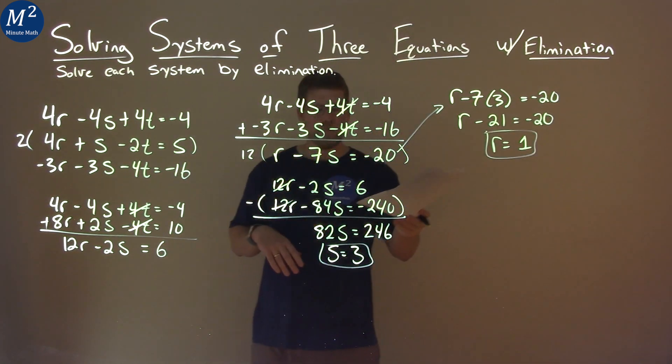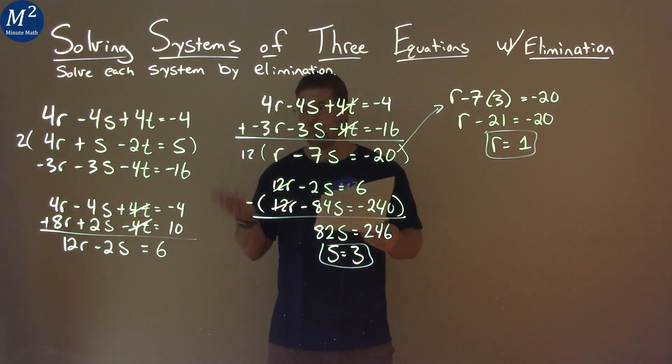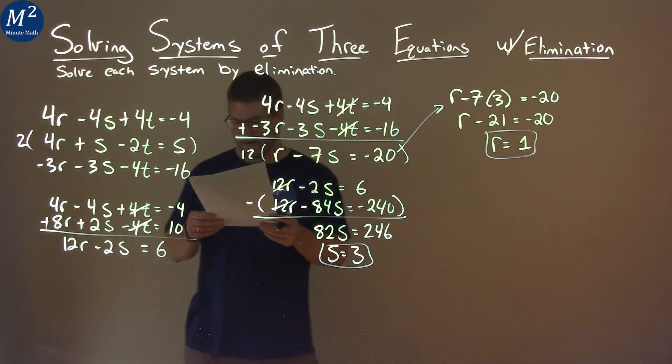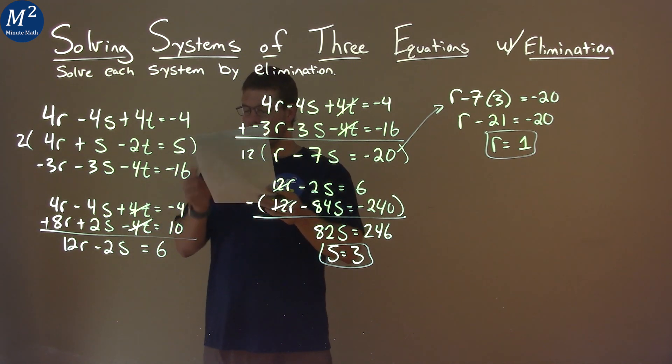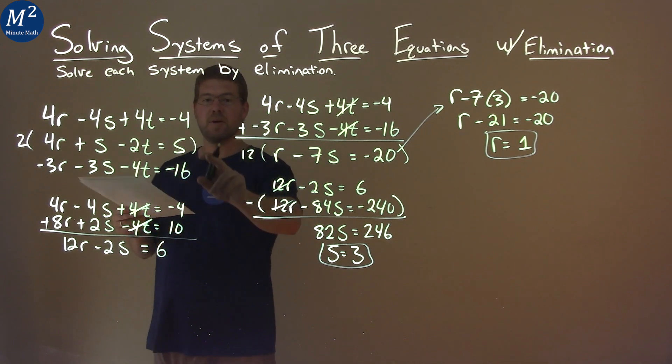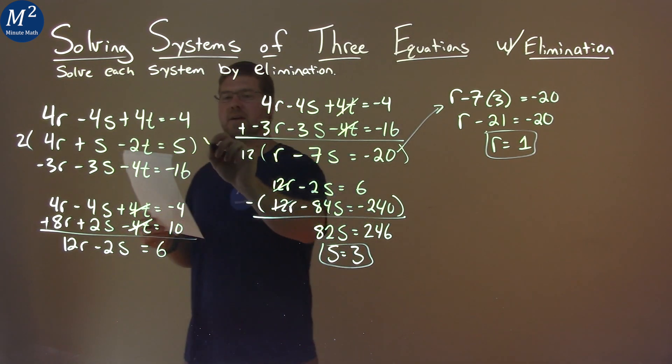So we have an r value of 1, and s value of 3. We can take both of those and try to find our t value. So we take an equation, and what equation do I pick? I believe I picked the second equation right here. So by picking that second equation...